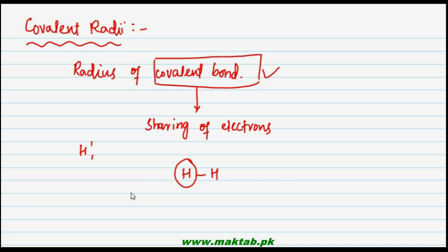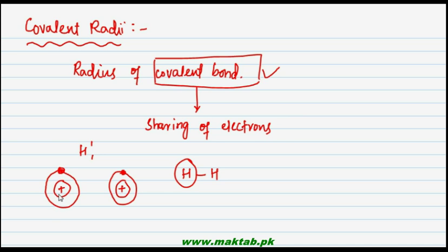For example, hydrogen has the configuration 1s1, which means it has one electron. Another hydrogen atom also has one electron. These two atoms are not stable on their own because their octet rule is not fulfilled.